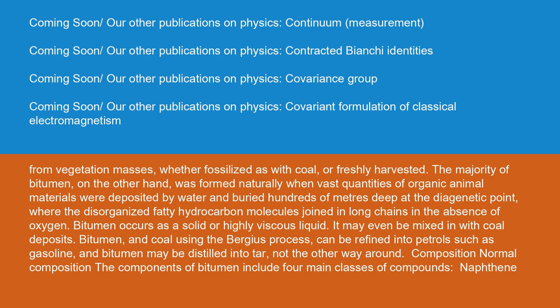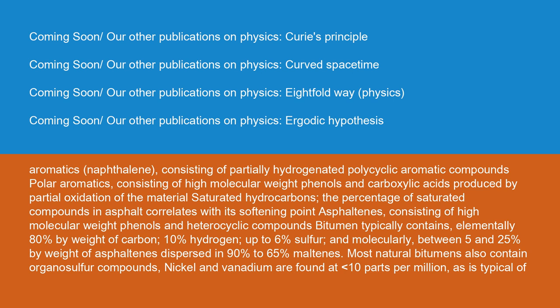The components of bitumen include four main classes of compounds: naphthene aromatics; naphthalene aromatics, consisting of partially hydrogenated polycyclic aromatic compounds; polar aromatics, consisting of high molecular weight phenols and carboxylic acids produced by partial oxidation of the material's saturated hydrocarbons; and asphaltenes, consisting of high molecular weight phenols and heterocyclic compounds. Bitumen typically contains elementally 80% by weight of carbon, 10% hydrogen, up to 6% sulfur, and molecularly between 5% and 25% by weight of asphaltenes dispersed in 90% to 65% maltenes.